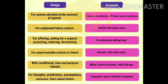Now we will see the use of it and some examples. First use: for an action decided at the moment of speaking. When we are talking about it, it becomes an action but it remains in the future. For example: 'I have a toothache, I will take some medicine.' The toothache is the present action, and taking medicine is the future tense.